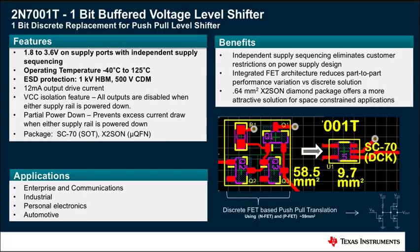In the layout example shown, a 4-FET discrete implementation is compared to the 2N7001T in the SC70 or DCK package. As you can see, there's a substantial savings in board space where the discrete solution takes up approximately 60 mm squared of board space versus the integrated solution at about 10 mm squared of board space. Overall, the 2N7001T is an ideal choice for applications needing a simple unidirectional push-pull level-shifting solution.